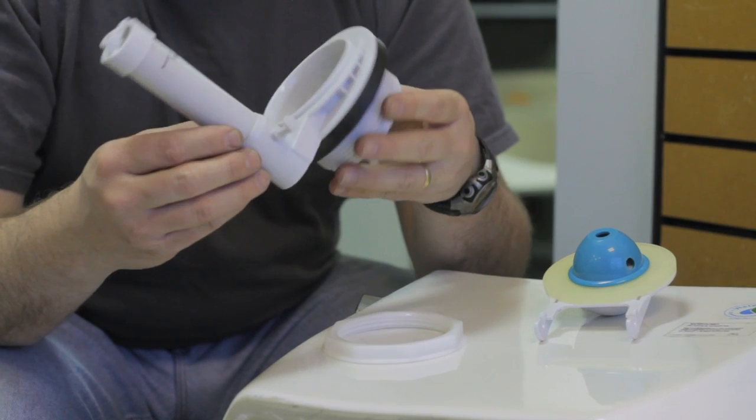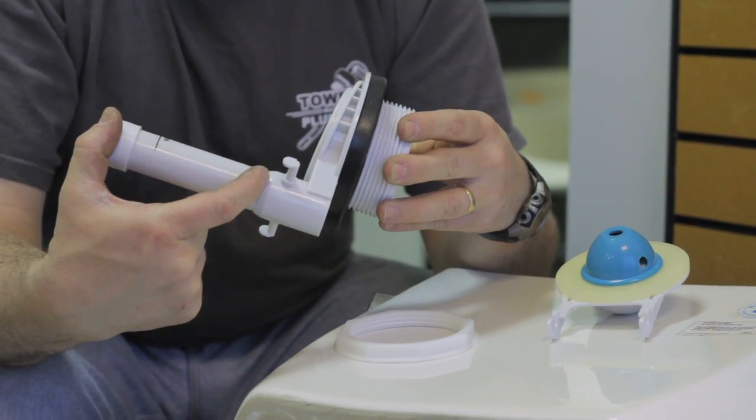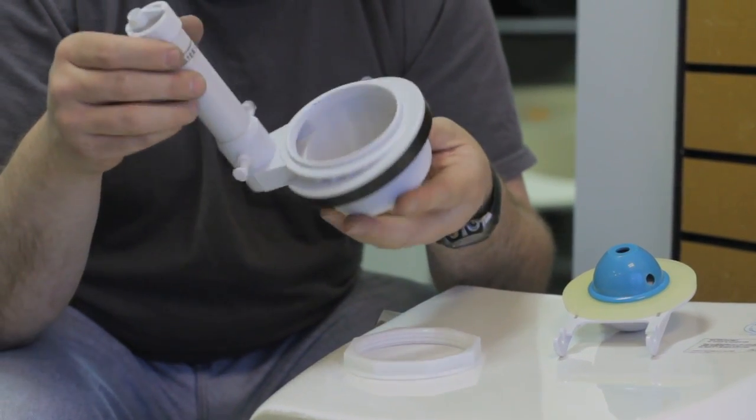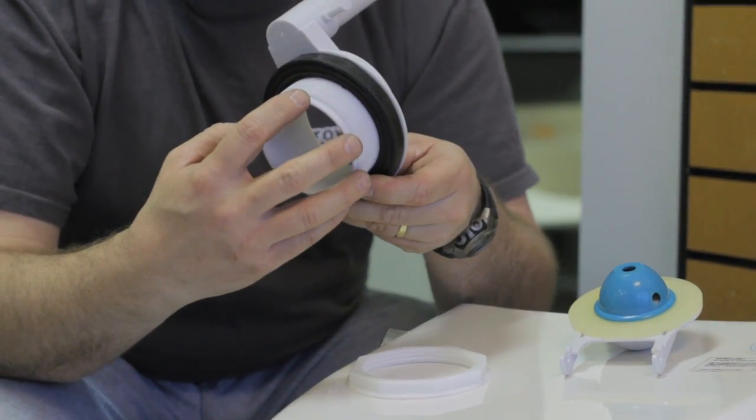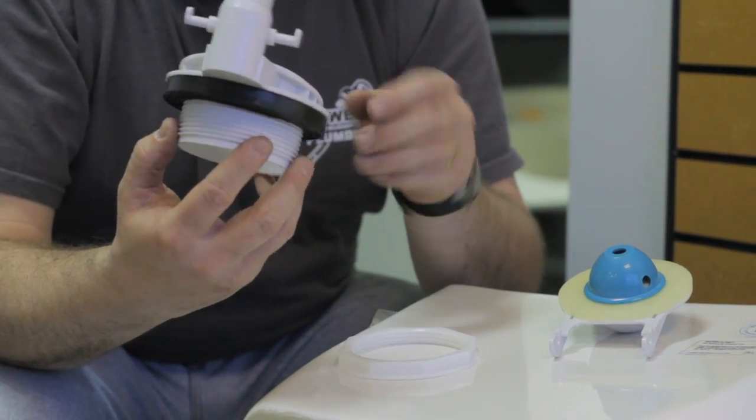The most common places for these to break is right here at this joint. And if that happens, unfortunately the only repair for this is to replace it. Take it down and match it. There are a few different sizes and styles these days. And then you're ready to reinstall this.